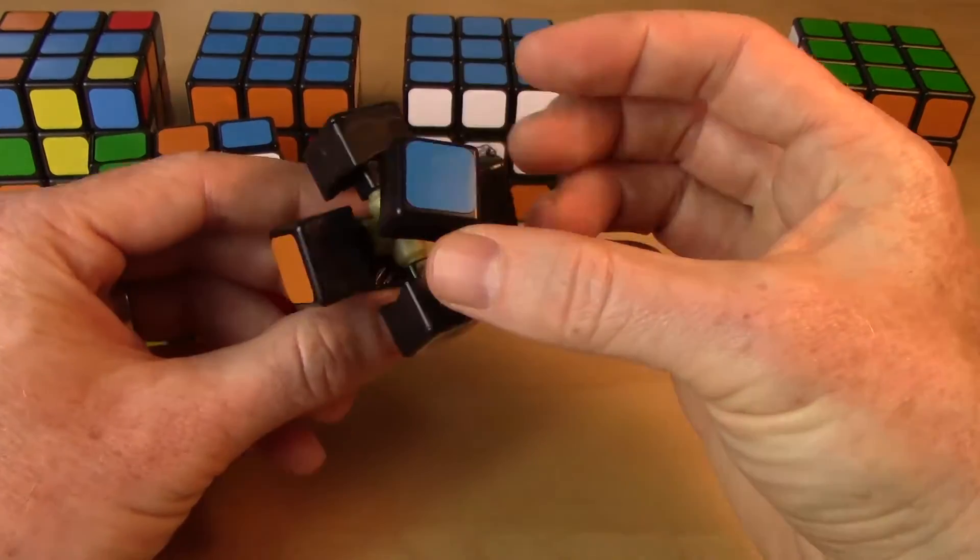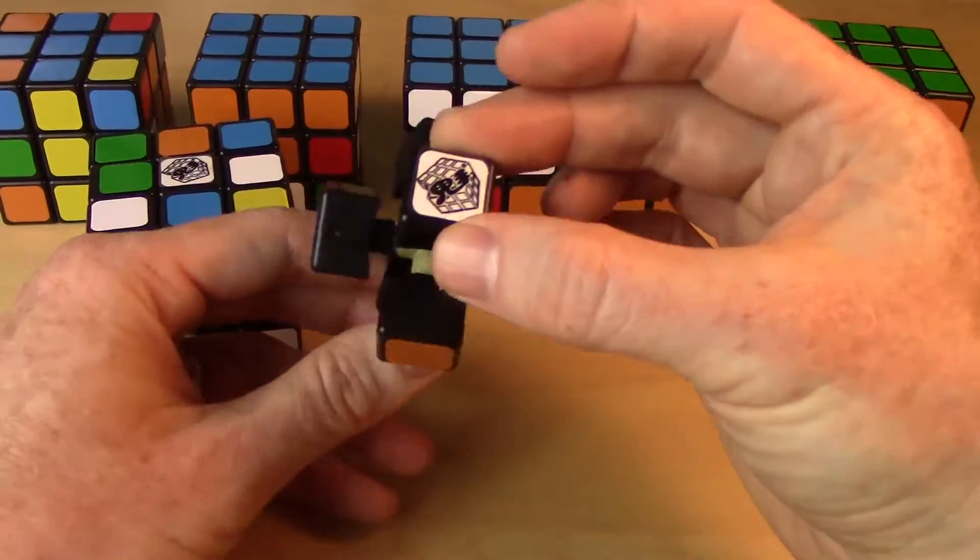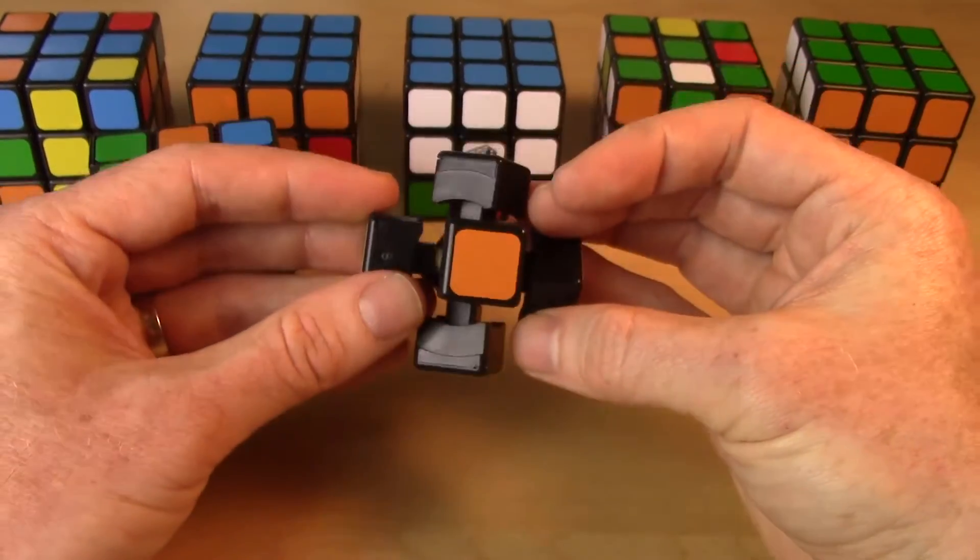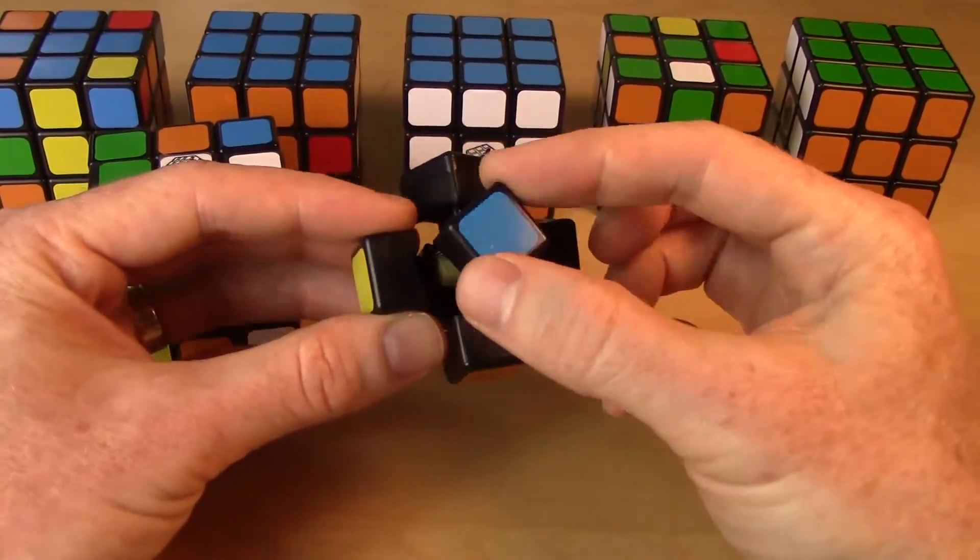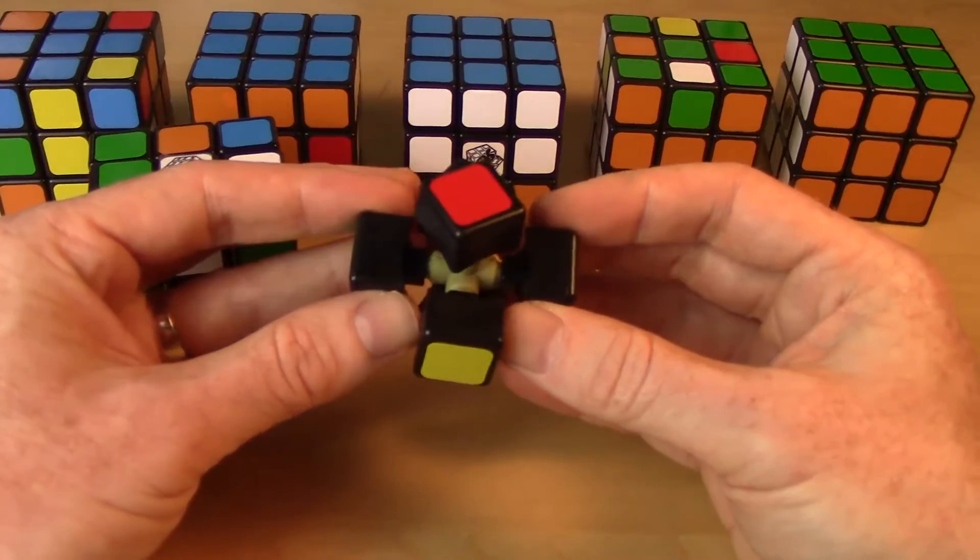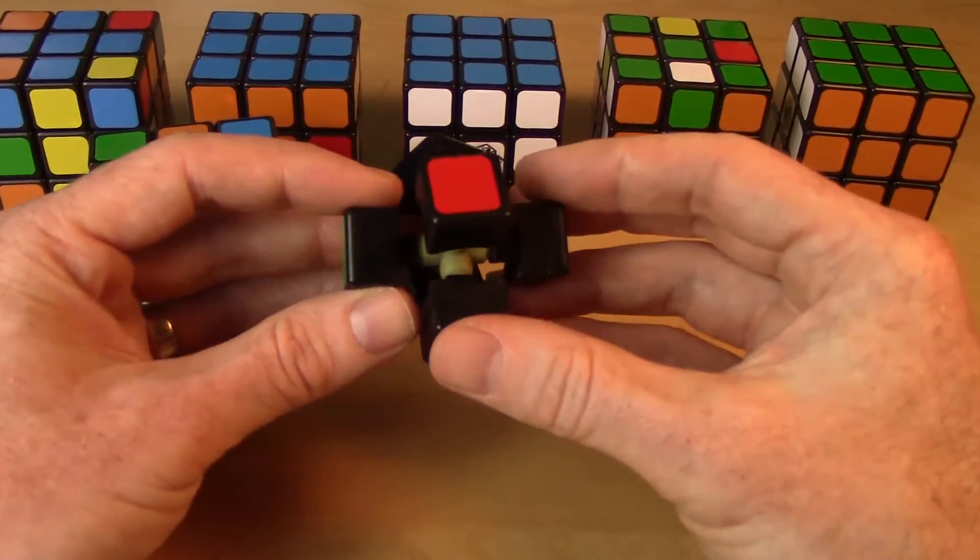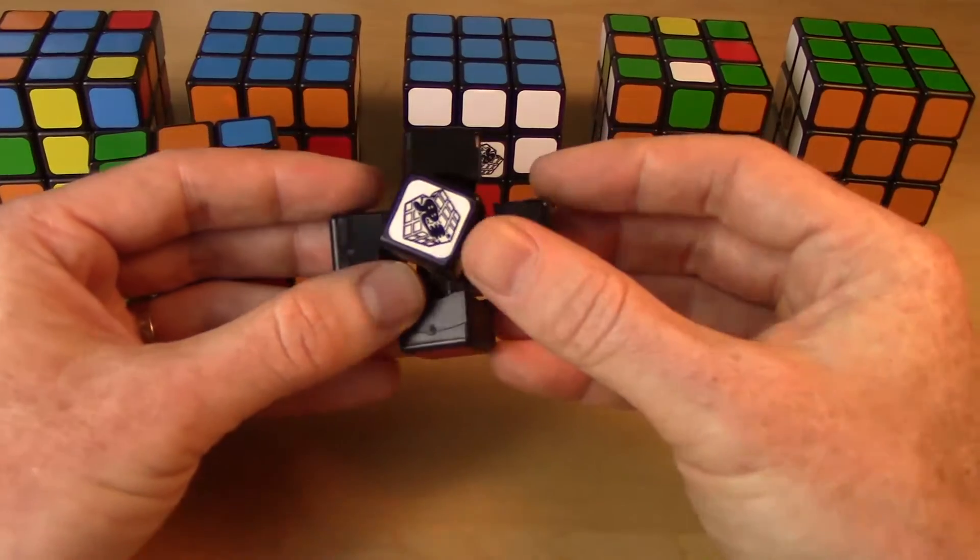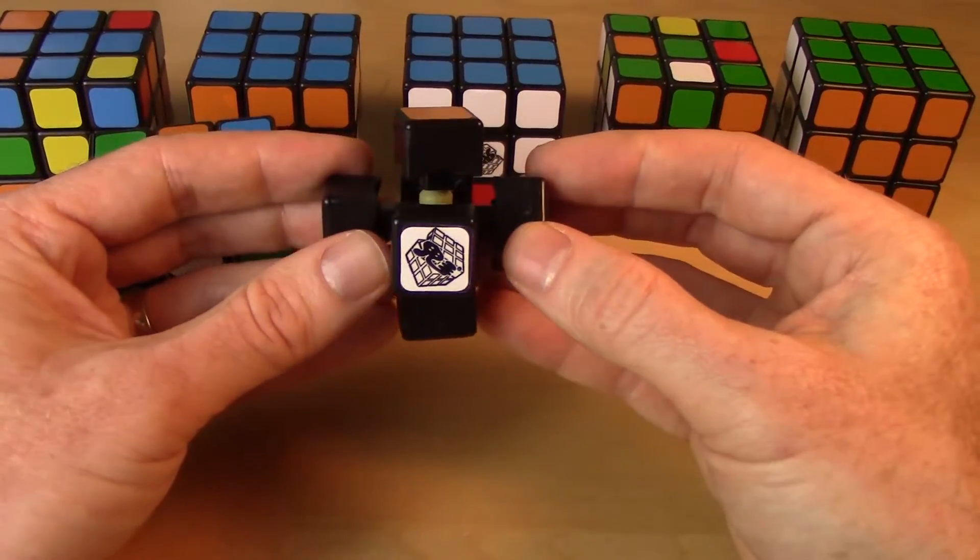So the green is always opposite the blue, the yellow is always opposite the white, and the red is always opposite the orange. Now that's the standard coloring of the cube. Your coloring that you may have may be different. You may have different colors. So just make a note of what your coloring scheme is because that's kind of helpful when you're starting to figure out where to put pieces as you're solving the puzzle.